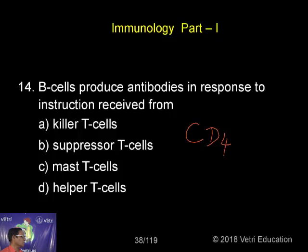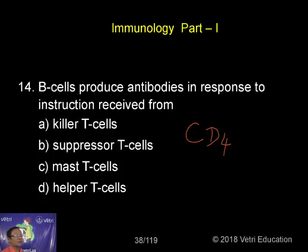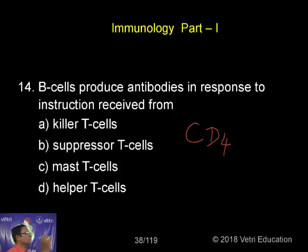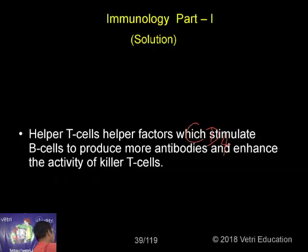The CD4 cells normally take part in what is called antibody mediated immunity, and CD8 cells take part in what is called cell mediated immunity. So the CD4 helper T cells normally stimulate the B cells — the bone marrow cells or B lymphocytes — to produce antibodies.